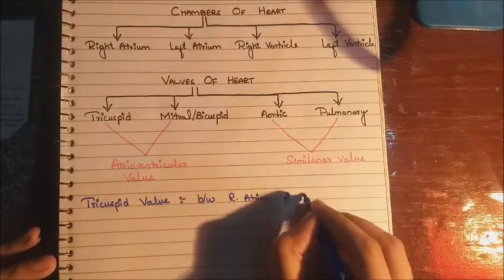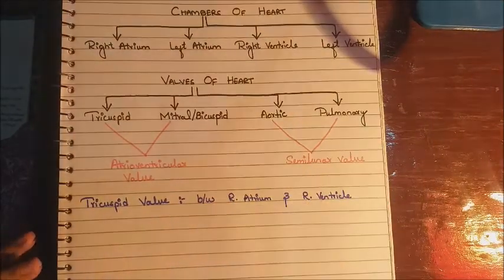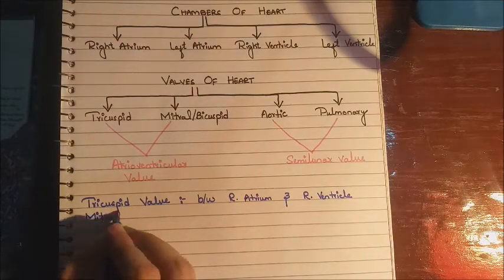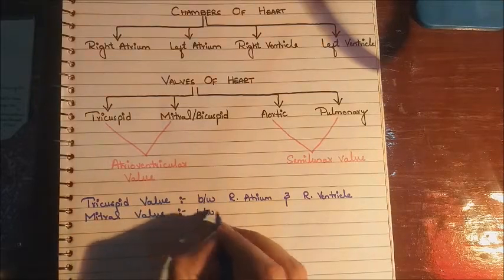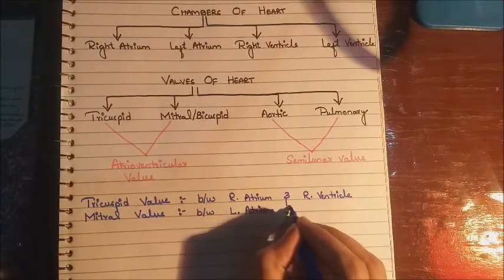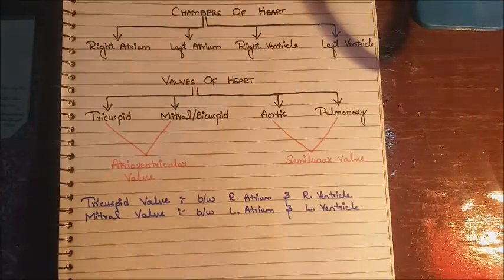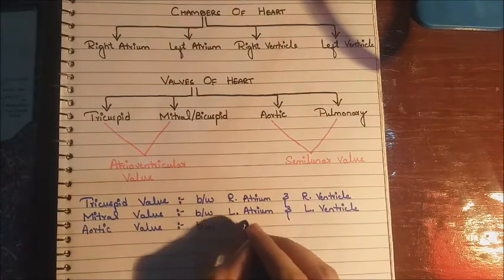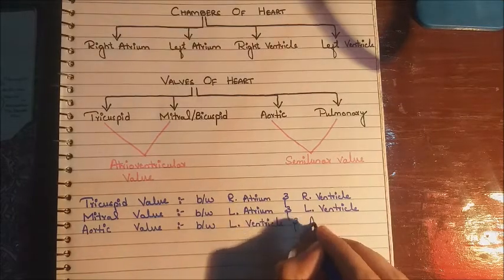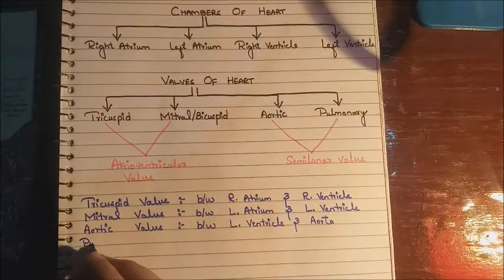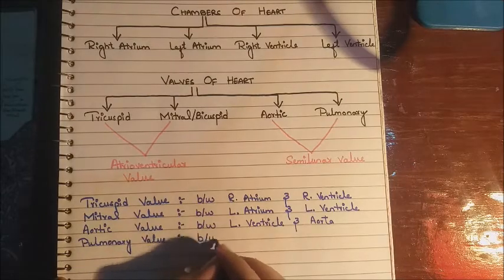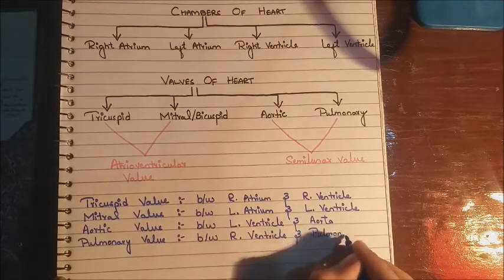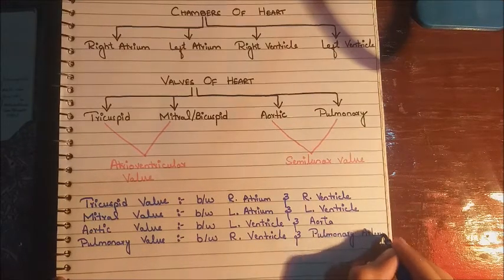Now we need to know the location of the valves. The tricuspid valve is located between the right atrium and right ventricle, while the mitral valve is located between the left atrium and left ventricle. The aortic valve is located between the left ventricle and the aorta, while the pulmonary valve is located between the right ventricle and the pulmonary arteries.